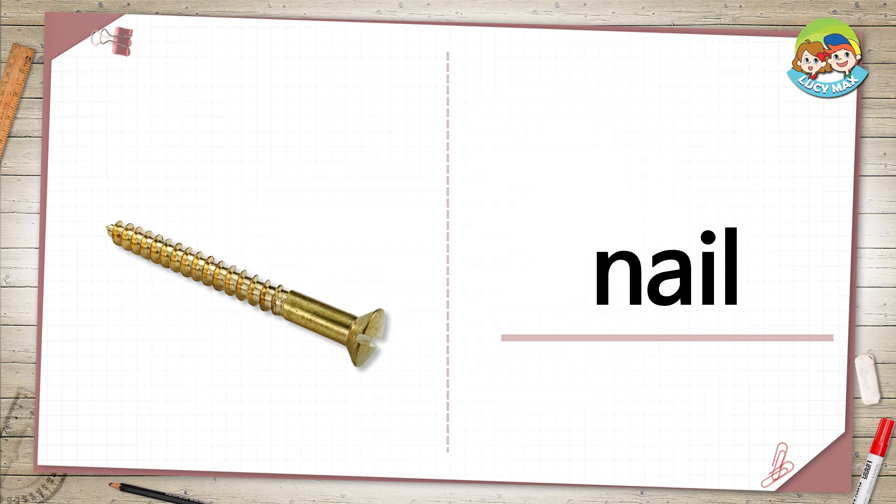Nail. This is a nail. We push a nail into a wall using a hammer. Then we hang something on the nail. What do you see on a wall in your house? Do you think it's hung on a nail?